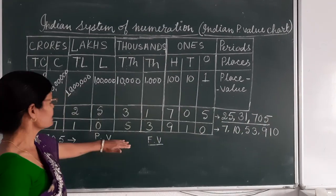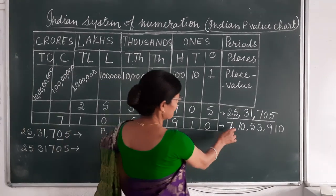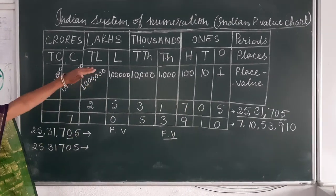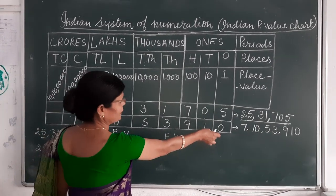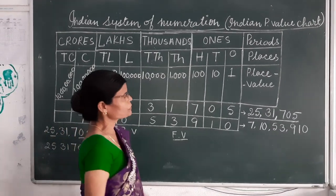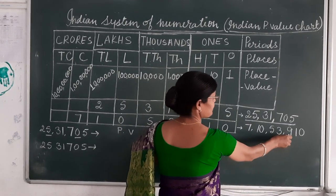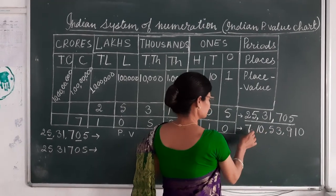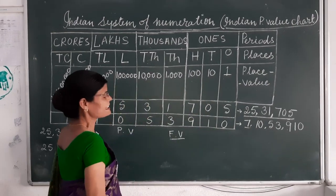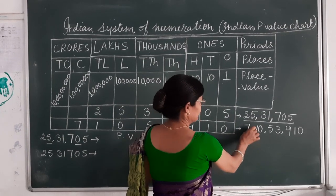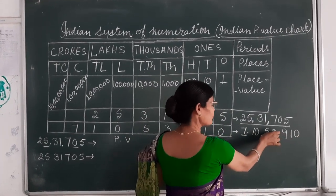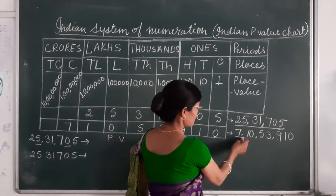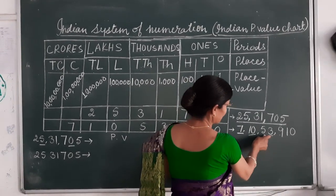Similarly, there is one more example. The number is 71,053,910. How do we group this in the place value chart? We will put this according to the place value chart and put the comma according to the period. Ones, Tens, Hundreds — 1, 2, 3 digits — put the comma. Then 2 digits and 2 digits. Here there is only 1 digit. So we will read and write this number as 7 Crores, 10 Lakhs, 53,910.